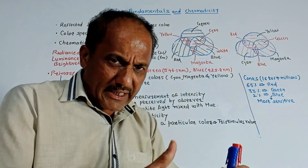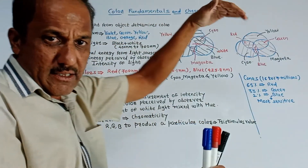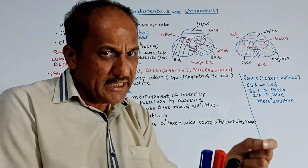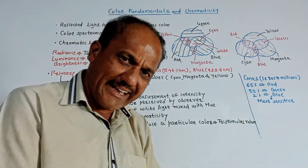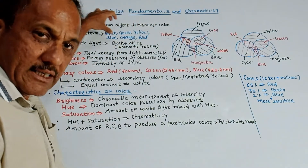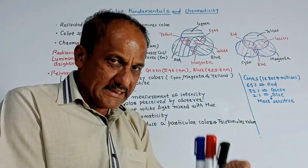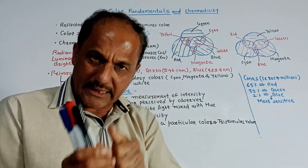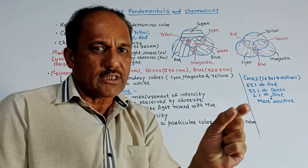Each band does not end abruptly. The other band does not start suddenly, but it changes smoothly. So there are six basic bands as far as this color spectrum is concerned, and since each band is not ending abruptly, there is a mixing of bands up to a certain portion.